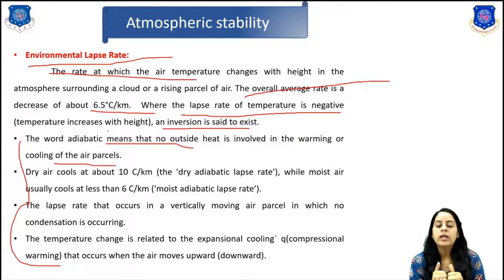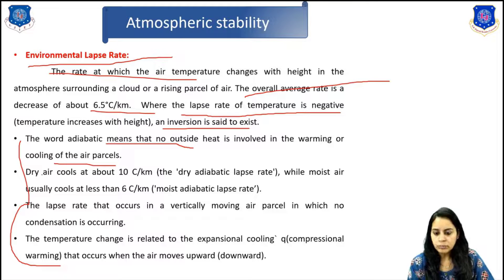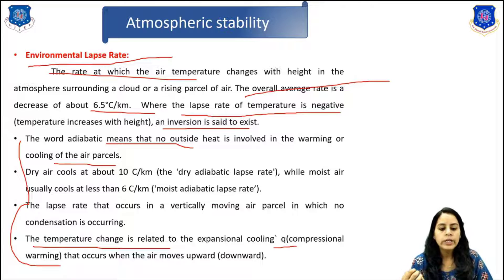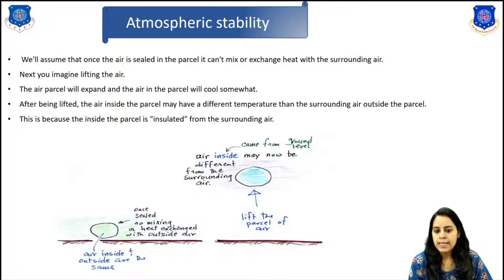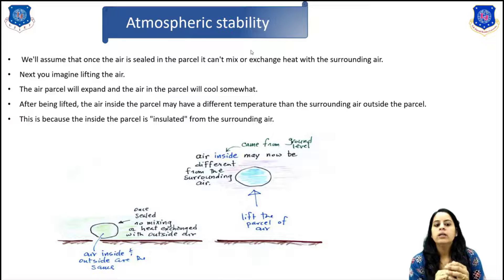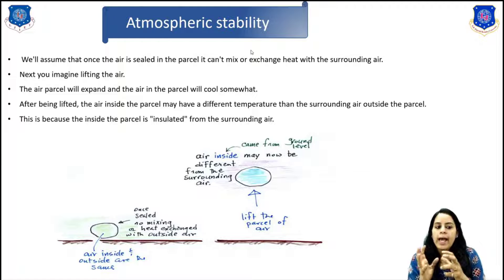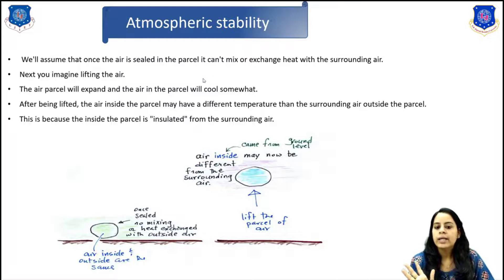The lapse rate that occurs in a vertically moving air parcel in which no condensation is occurring is called the dry adiabatic lapse rate. The temperature change is related to expansional cooling that occurs when air moves upward or downward. Here on screen you can see that you take an isolated parcel of air — at this starting point, the air inside the parcel is exactly equal to the air outside in temperature and density.